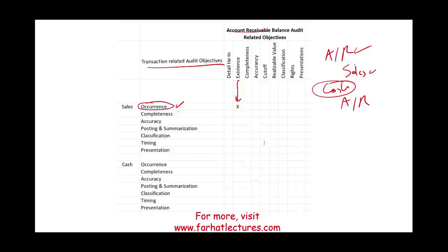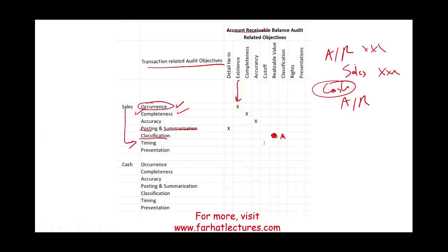If you have assurance that all your account receivable are recorded, and assurance that all your sales are recorded, you have assurance that account receivable is complete as well. If your sales are accurate, your account receivable is accurate — accuracy relates to both. If you are posting and summarizing sales, the detailed sub-ledger to ledger tie-in is also correct. If you are properly classifying sales, you are properly classifying account receivable. If you are recording sales in the proper period, you are also recording account receivable in the proper period — this is cutoff. If you are properly presenting sales, you are most likely properly presenting account receivable.